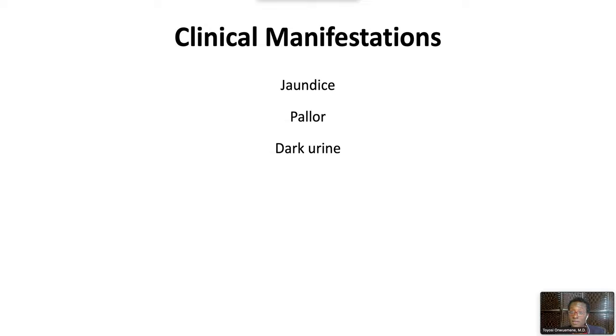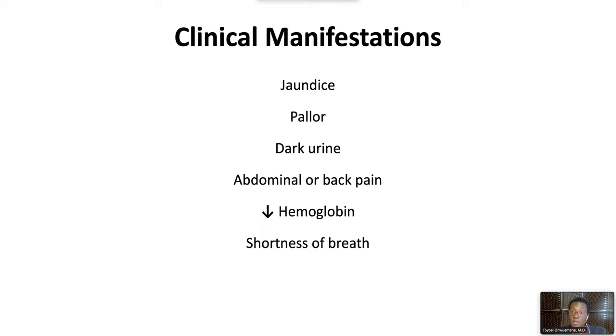Clinical manifestations typically occur within 1-3 days of drug ingestion or oxidant injury, including the sudden onset of jaundice, pallor, and dark urine associated with abdominal or back pain. There is an abrupt fall in hemoglobin concentration by 3-4 grams per deciliter. There may be shortness of breath due to anemia.